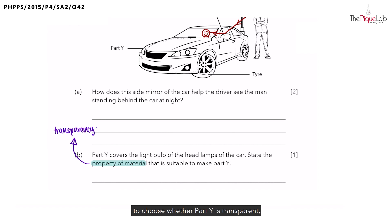So this means to choose whether part Y is transparent, translucent, or opaque. Please remember that transparency is not the same as transparent. Okay, transparency is the measure of how much light is able to pass through a material, whether the material is translucent, transparent, or opaque. Now for transparent, it simply means that the material allows most light to pass through and does not block any light. So that is transparent material.